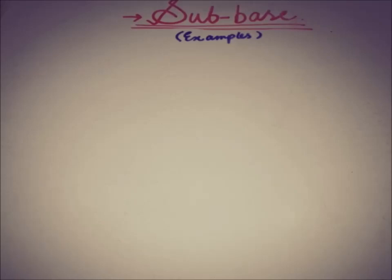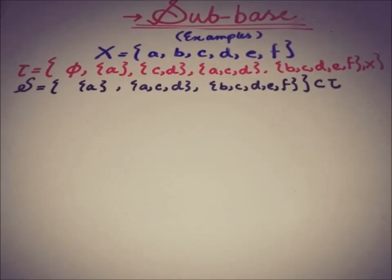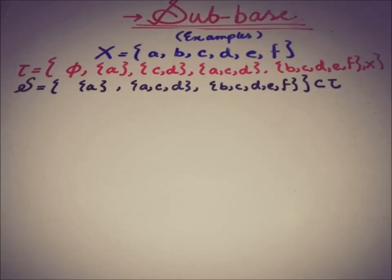Let's start with the first example. Here we have space X containing elements A, B, C, D, E, F, and a topology on that space X, and a sub-collection of that topology that we have to test — whether it is a sub-base or not. We apply the definition of sub-base.